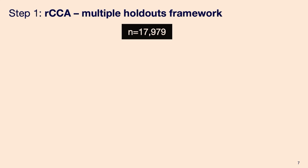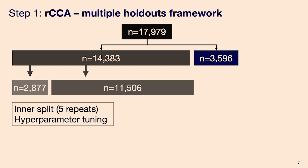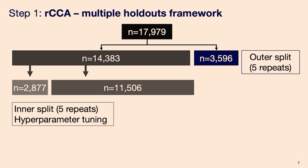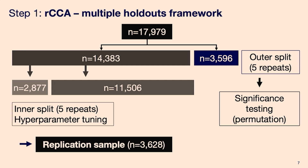We used the UK Biobank cohort. Of the initial 18,000 participants, we held out 20%, and the remaining 80% were used for hyperparameter tuning. Once we selected a model, we projected the holdout split onto the weights to get a test estimate. We repeated that five times and performed a permutation test to establish statistical significance. This framework was replicated in a different sample, also from the UK Biobank.